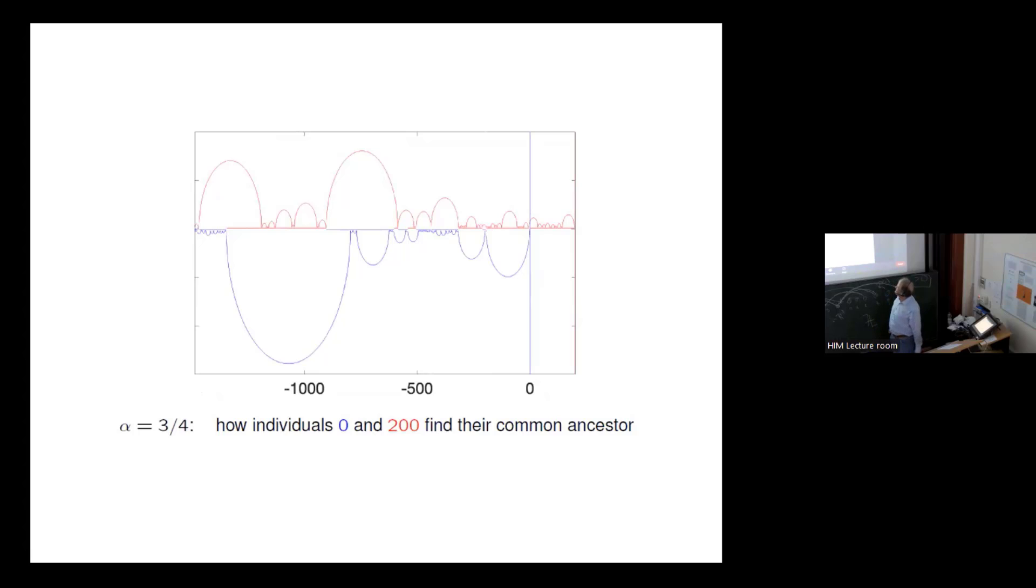Okay, for three quarters here is a simulation how the individuals between zero and one hundred or two hundred, between zero and two hundred find their common ancestor. And it's just two individuals which we look at. It's the individual zero whose ancestral lineage is pictured in blue, and it's the individual 200 whose ancestral lineage is pictured in red. And then you see they miss each other for a while, and it's here that they get each other.